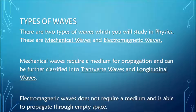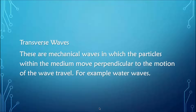There are two types of waves which we will be studying in physics: mechanical waves and electromagnetic waves. Mechanical waves require a medium for propagation and can be further classified into transverse waves and longitudinal waves. Electromagnetic waves, on the other hand, do not require a medium and are able to propagate throughout empty space — they can propagate without matter.